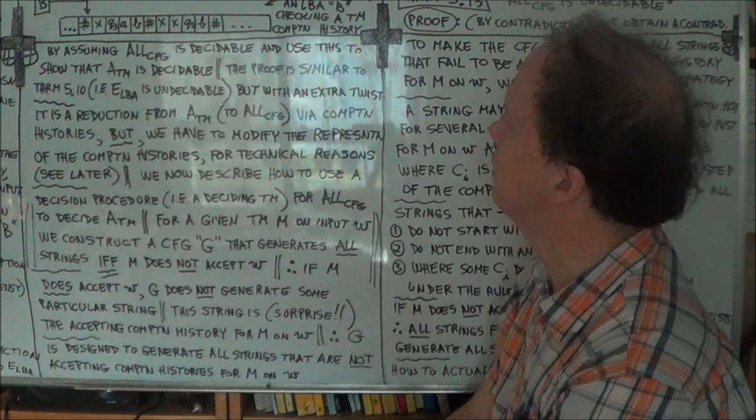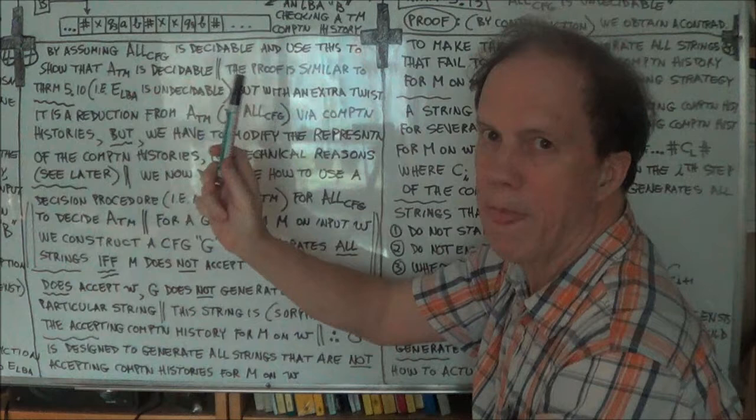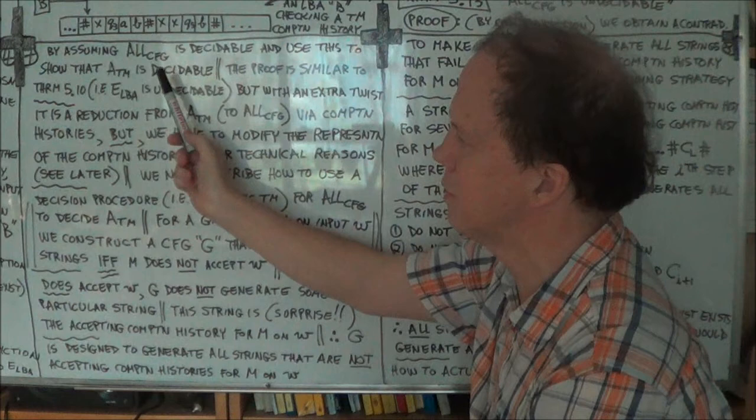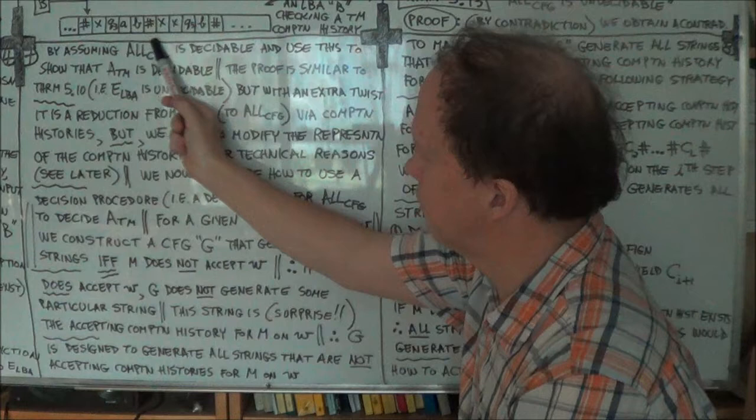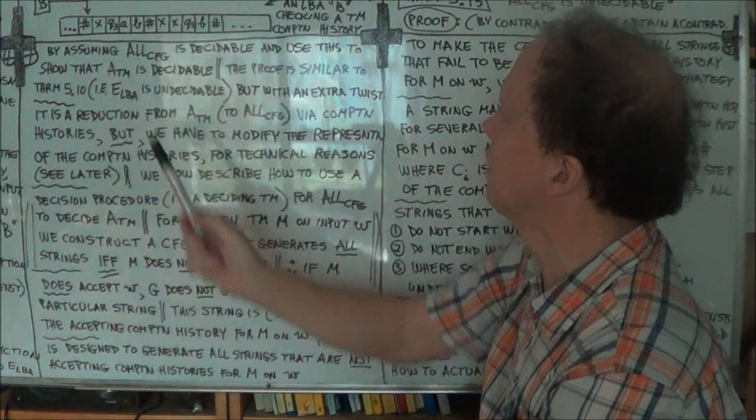Proof by contradiction: we'll assume that this language is decidable — in other words, there's a Turing machine that decides that language. We will use the existence of that Turing machine to help us decide A_TM. The Turing machine that decides ALL_CFG will be used as a component in a larger Turing machine that will decide A_TM, and that's a contradiction because A_TM is undecidable.